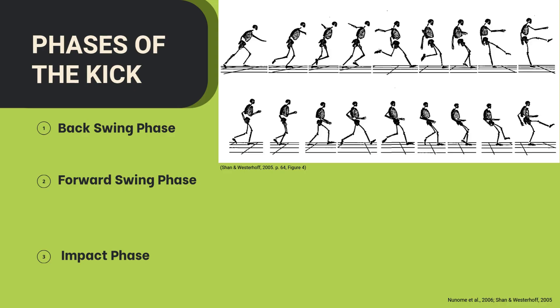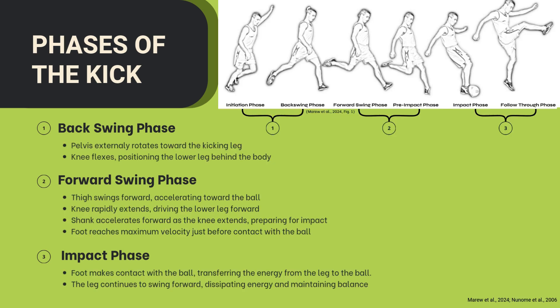The kick can be broken down into three phases: the backswing, forward swing, and impact phase. In the backswing phase, the pelvis is externally rotated towards the kicking leg and the knee flexes, positioning the lower leg behind the body.